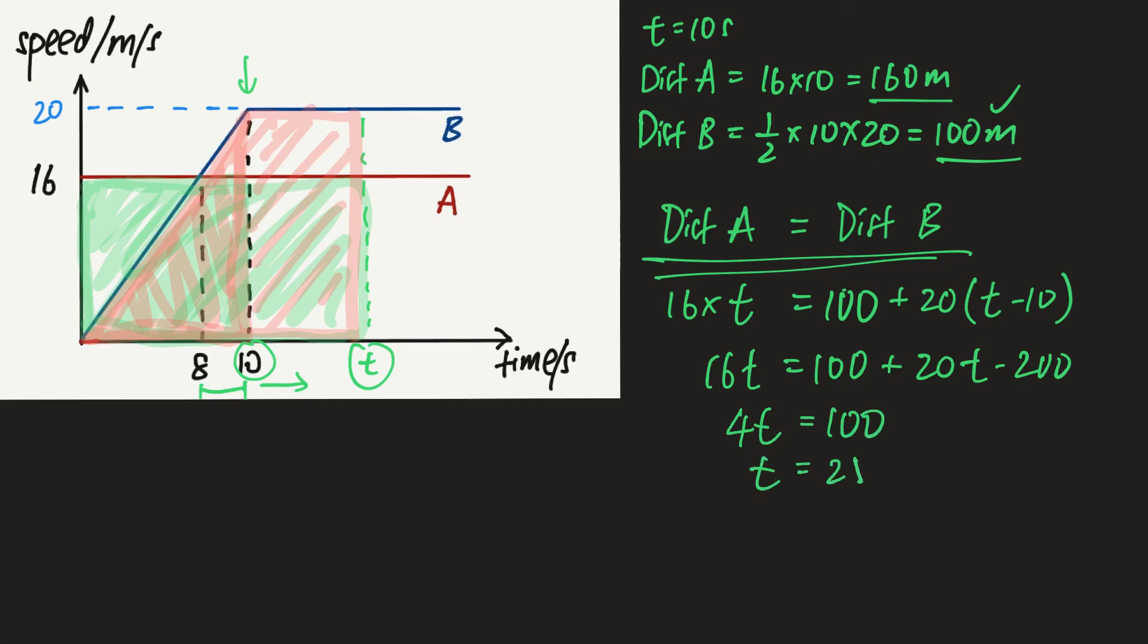So that's when the overtaking takes place. If you want to know what is the distance traveled by both cars when they overtake each other, you can either look at distance A or distance traveled by car B. Obviously this is so much easier, so to find the distance and both of them car A and car B will be the same, I can just take either one of them, 16 times t. We know now that the time is 25 seconds, so you'll end up with a distance of 400 meters.